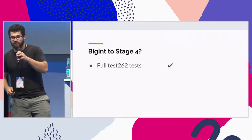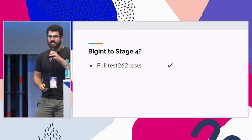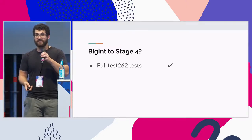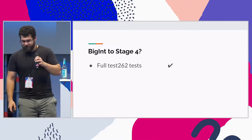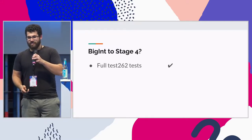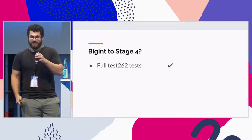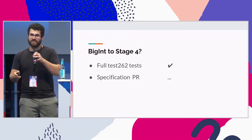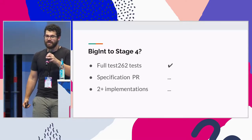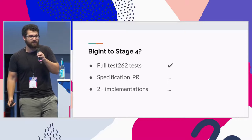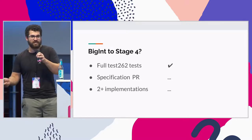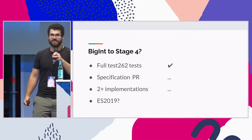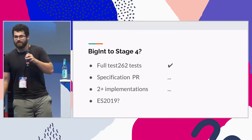To get to stage 4, we need a full Test262 test suite, a pull request to the main specification, and two full implementations — we have one complete implementation, but the next two are still in progress. So maybe we'll get this by ES2019, or maybe ES2020.